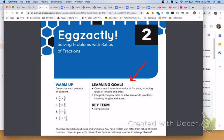Hi class, in lesson 2, you will be solving problems with ratios of fractions. Learning goals for today: compute unit rates from ratios of fractions, including ratios of lengths and areas, and interpret complex rates to solve real world problems involving lengths and areas. A key term to look for today: complex ratio.